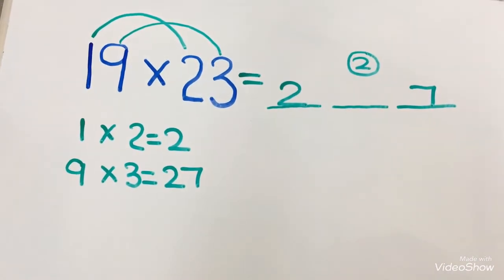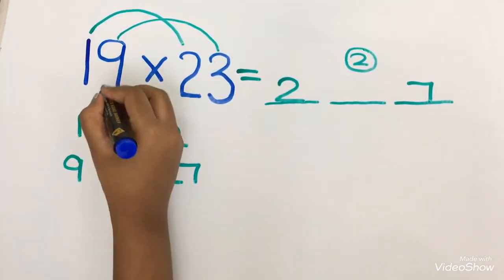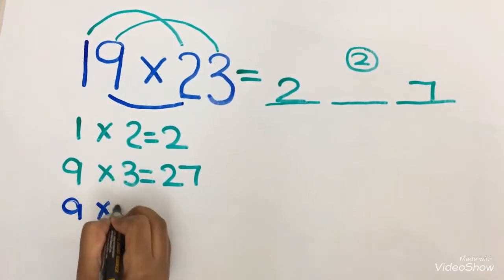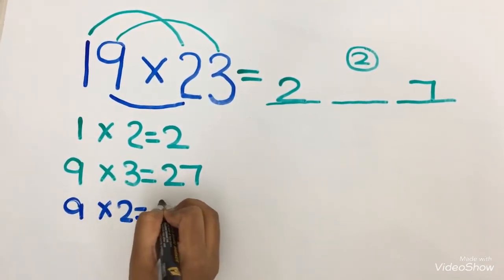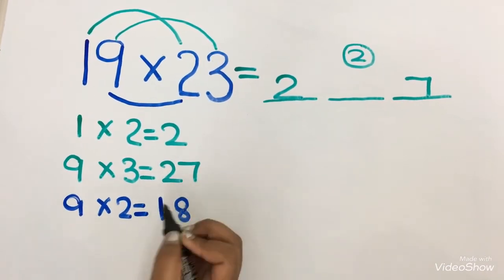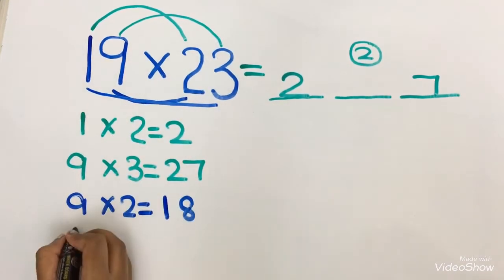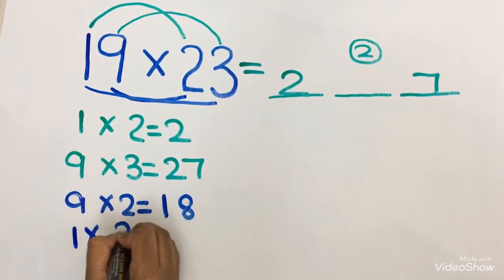Now we are going to multiply the middle numbers. 9 into 2. 9 into 2 equals to 18. And 1 into 3 equals to 3.